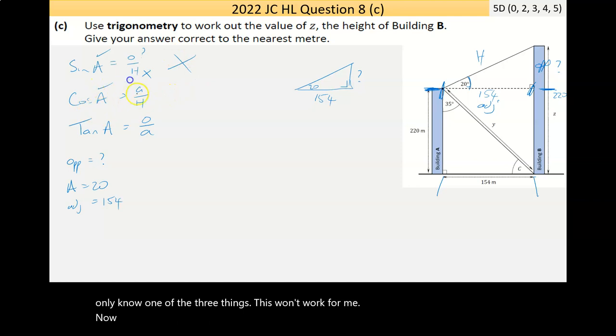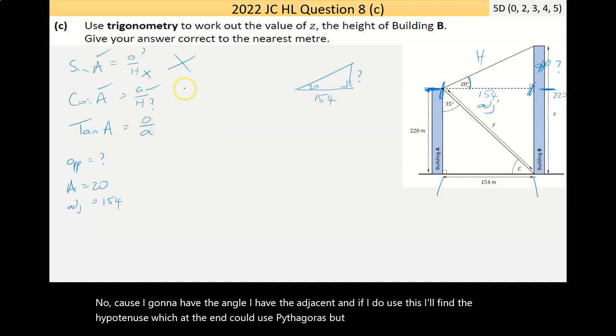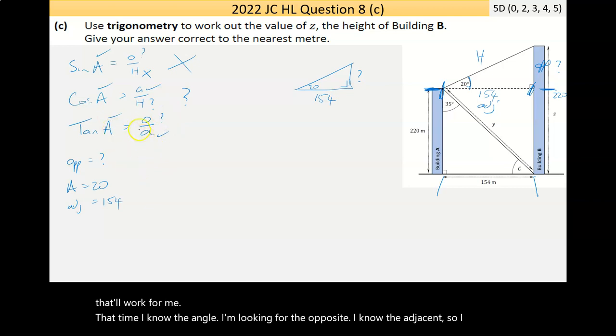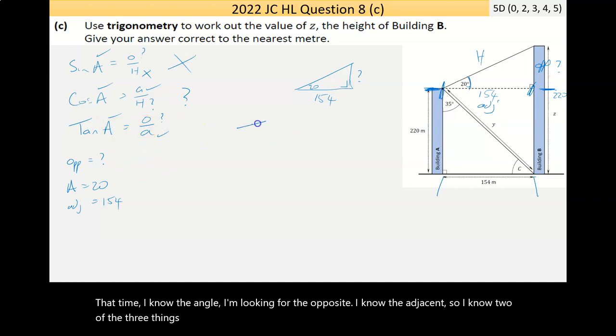Now, cos, again, I have the angle, I have the adjacent, and if I do use this, I'll find the hypotenuse, which I then could use Pythagoras, but I want to go there directly. So, maybe that'll work for me. Now, tan, I know the angle. I'm looking for the opposite. I know the adjacent. So, I know two of the three things. Tan will work for me.